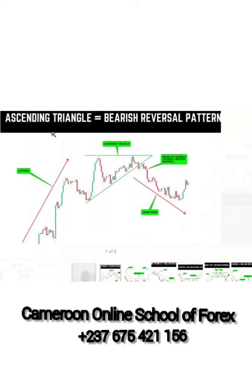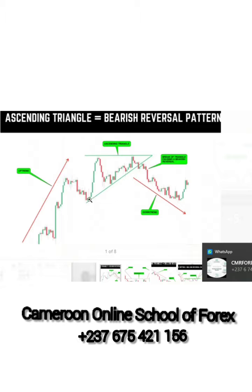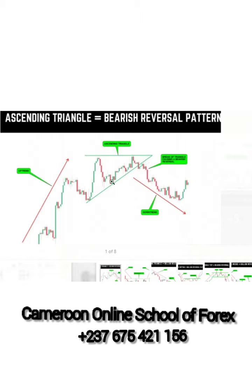Starting with the ascending triangle. With the ascending triangle you discover that this is an uptrend — the market is moving upward. You need the resistance and support. When the market is at support it moves up to a particular resistance. Allow it to drop; once it drops and reaches the support, link these two points and draw a straight line. The market has gone again and pushed the resistance, so we link these two points and now we're waiting for a breakout.